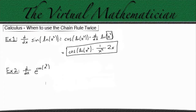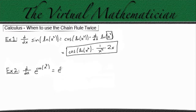Now let's look at example two. Take the derivative with respect to x of e to the cosine of x cubed. The chain rule says take the derivative of our function times the derivative of whatever is on the inside. We know the derivative of the exponential is always itself, so we're going to get e to the cosine of x cubed, times the derivative of cosine of x cubed.